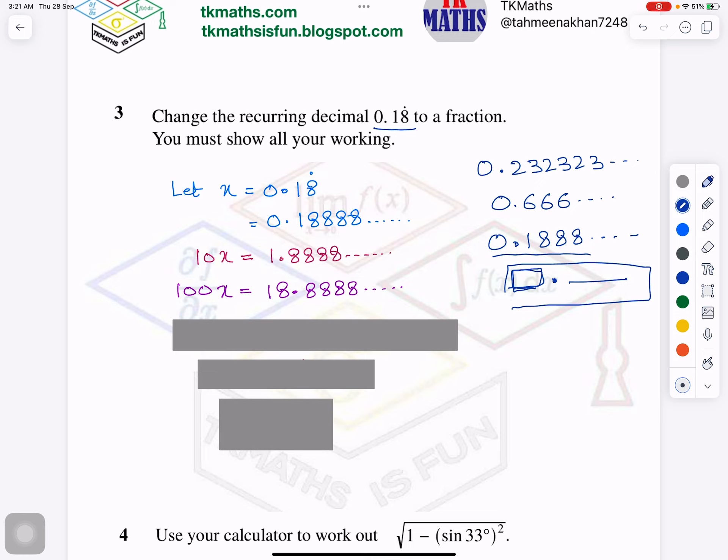So now when I multiply this by 10, what will happen? Decimal will move just to one place. So I will have 1.888888. So after decimal I have all same digits. Because the recurring has only 8s afterwards. Then I am multiplying it by 100.